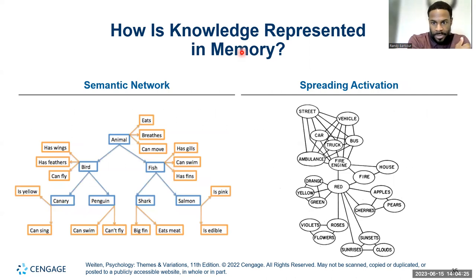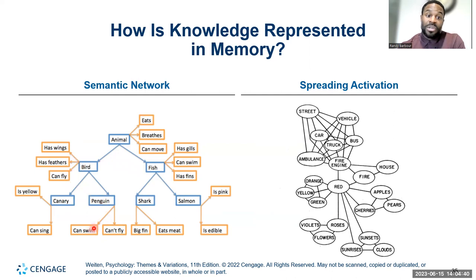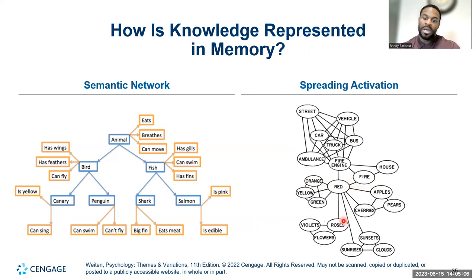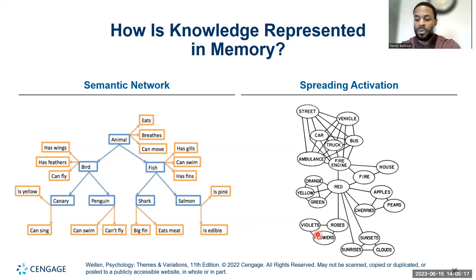In a semantic network diagram, 'animals' connects to 'eat, breathe, move.' Animals include fish — which have gills, swim, and have fins — and birds, which can fly, though some can't. Spreading activation means one word spreads out to a network of other meanings. If I say 'street,' you get ambulance, car, bus, vehicle. If I say 'red,' you might say fire, apples, cherries, roses — and 'roses' leads to flowers, violets. One word spreads the activation of associations.